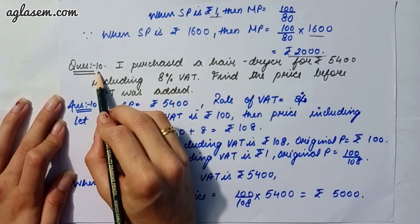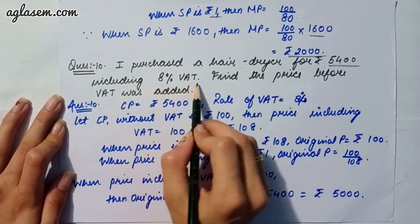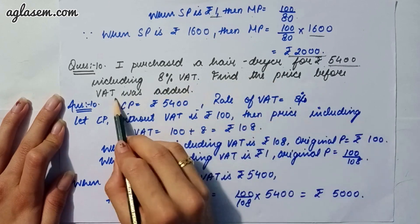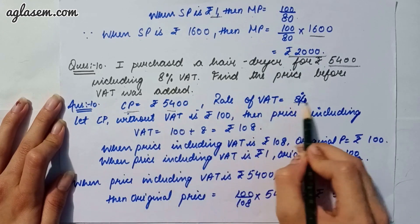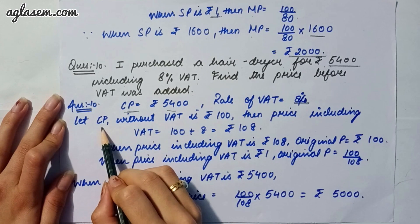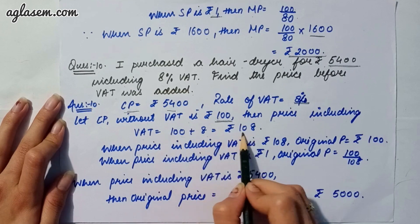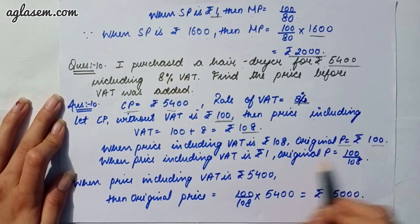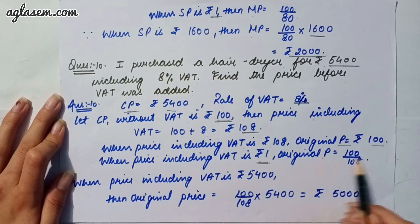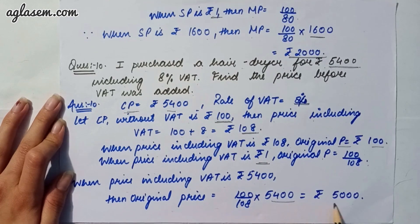Moving to our tenth and last question: I purchased a hair dryer for rupees 5400 including 8 percent VAT. Find the price before VAT was added. CP including VAT is rupees 5400 and VAT is 8 percent. Let the price without tax be rupees 100, then price including VAT is 100 plus 8, that is 108. When price including VAT is 5400, original price is 100 divided by 108 into 5400, giving rupees 5000.